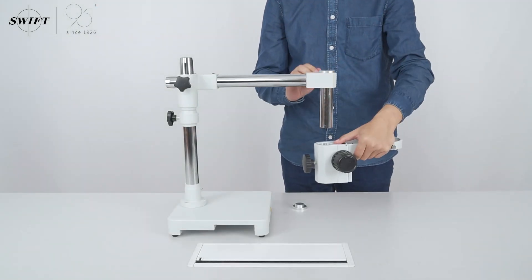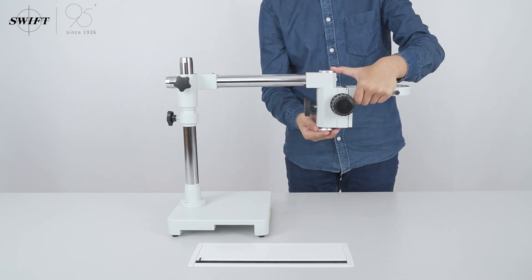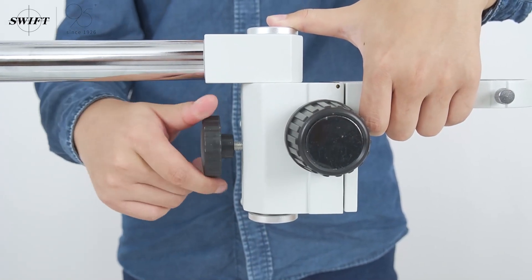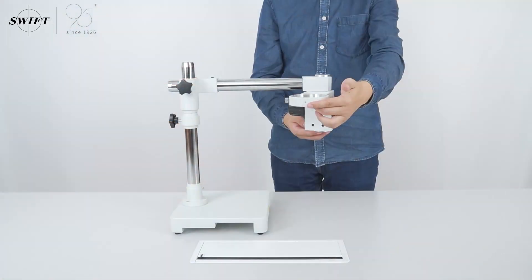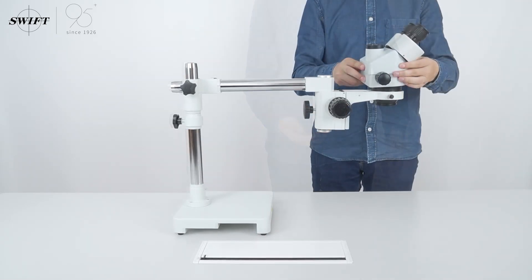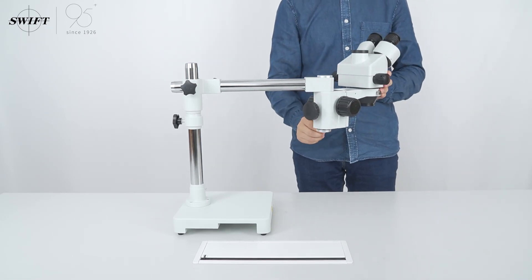After the installation of the frame, pay attention to the anti-slip and check whether the rotation is free. Install the mirror body host and tighten the screws to check the observation mode.